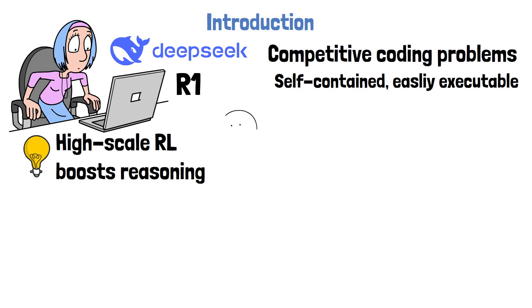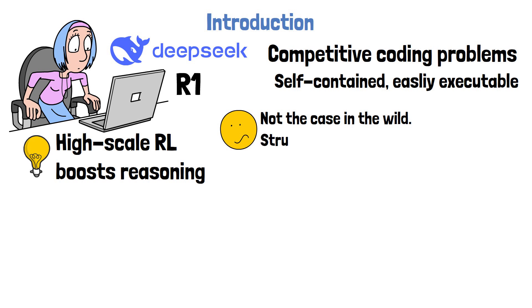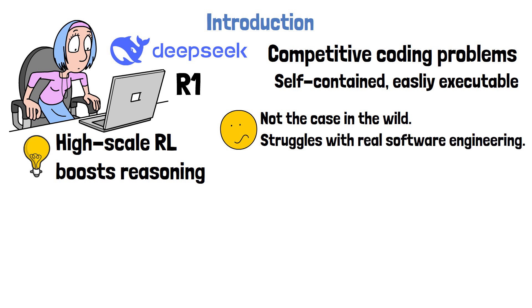In the real world though, like fixing a bug in a complex backend service, it's not always that simple. Running the code might need a dedicated environment, and even if you can execute it, figuring out if the solution is actually correct can be much trickier. This is why models like DeepSeek R1 still struggle when it comes to real-world software engineering.